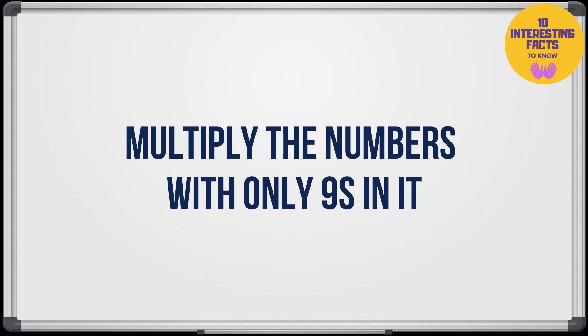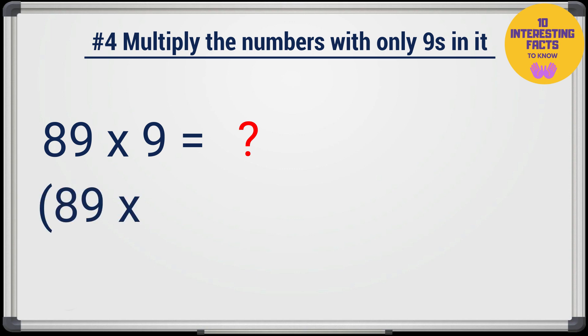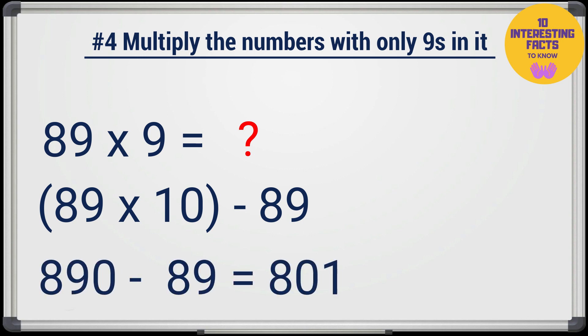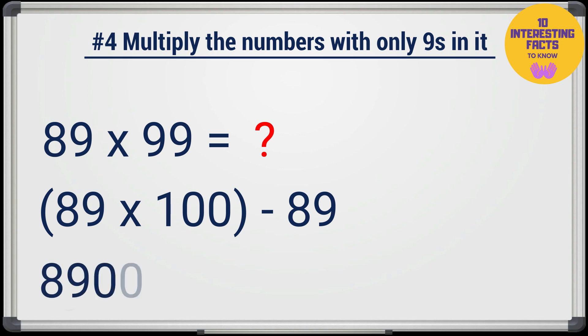Next is a simple way to multiply the numbers with only 9's in it like 9, 99, 999. Let's try to find 89 times 9. Multiply your number by 10 and then subtract the number from it. So 89 times 10 minus 89 which is 801. If we have to find 89 times 99 we will multiply it by 100 and then subtract the number from it. So 89 times 100 minus 89 which is 8,811.